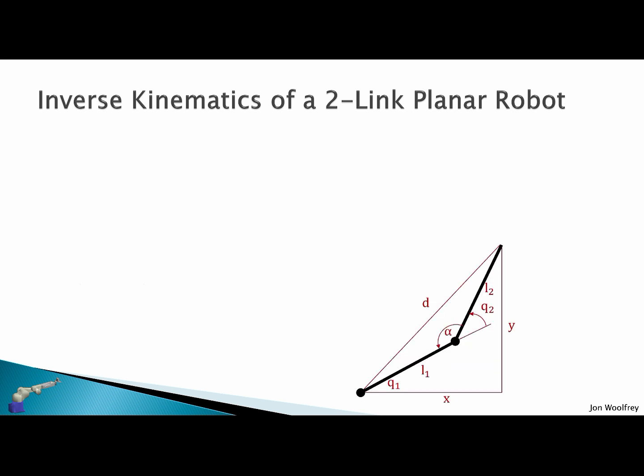To solve this we need some trigonometry. From Pythagoras' theorem we know that d squared is equal to x squared plus y squared. But by the law of cosines we also know that d squared is L1 squared plus L2 squared minus 2L1 L2 cos alpha. So we have the lengths L1 and L2 and the angle between them alpha.